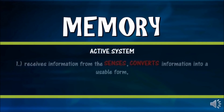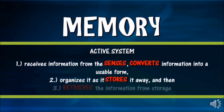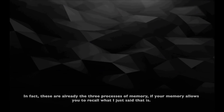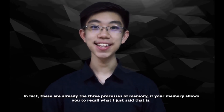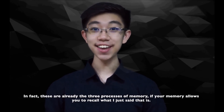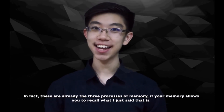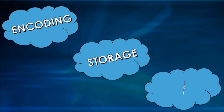Memory is defined as the active system that receives information from the senses, converts information into a usable form, organizes it as it stores it away, and then retrieves the information from storage. These are the three processes of memory. The three processes of memory can be summarized as encoding, storage, and retrieval.